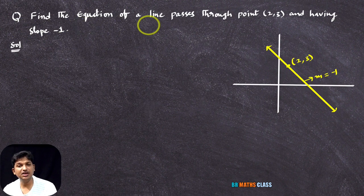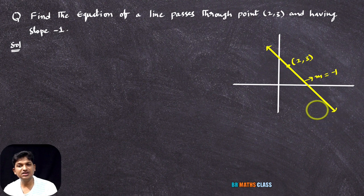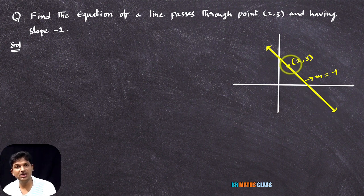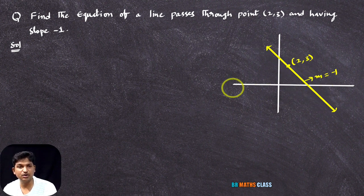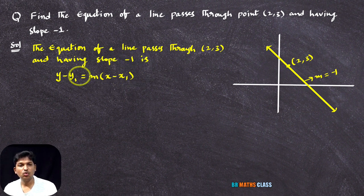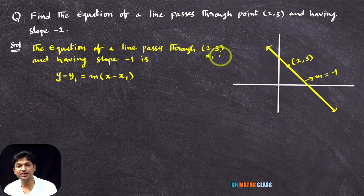Observe this question: Find the equation of a straight line that passes through the point (2, 3) and having slope minus 1. To help you understand, I've drawn a line here. We are finding this line equation which passes through the point (2, 3) and which is having slope minus 1. We know two things about the line — one is a point on the line, another one is the slope of the line. So we use point slope form to find this line equation. In this formula, wherever x1, y1 is there, I'll substitute the point (2, 3), and wherever m is there, I'll write minus 1.